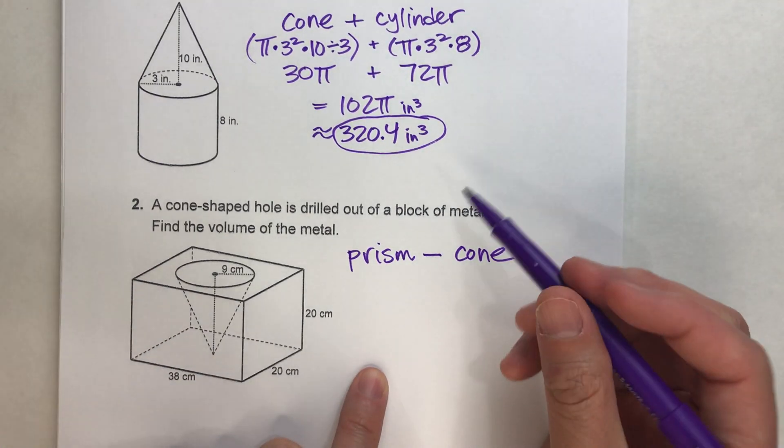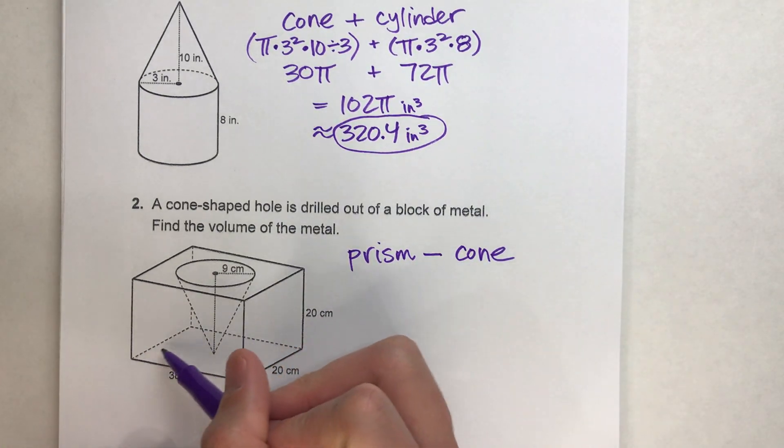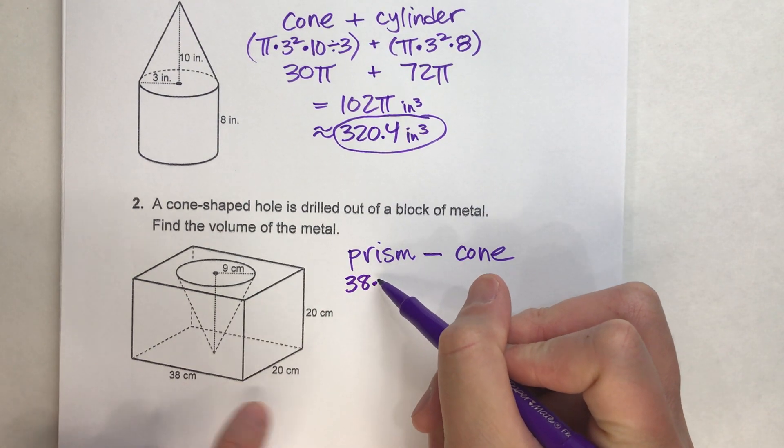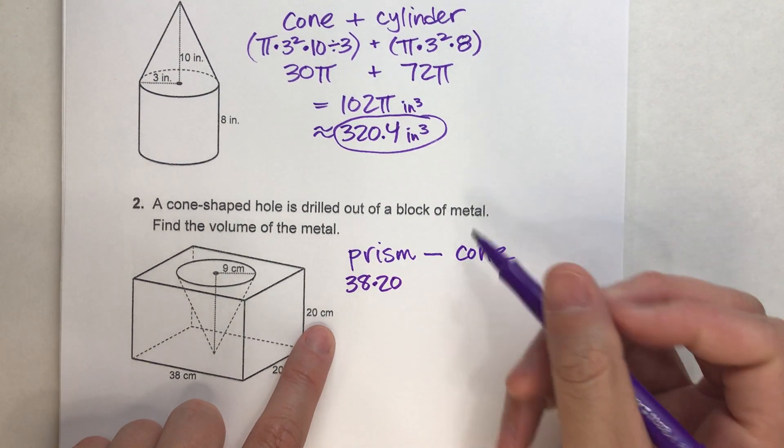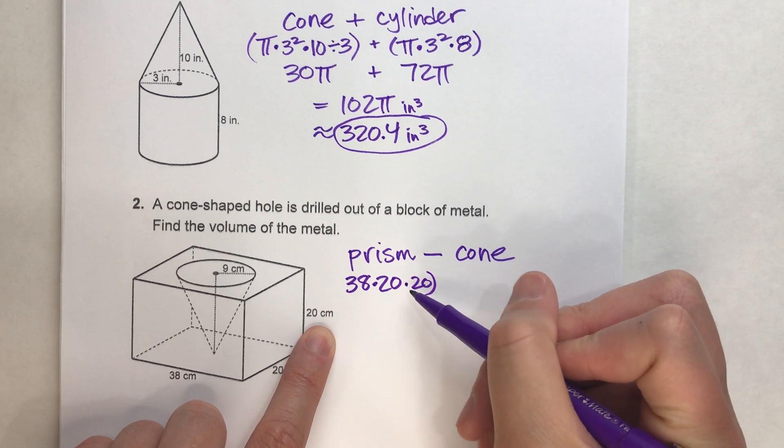So let's do this now. The prism is area of the base times the height, so 38 times 20 times the height, which is 20. So there's my prism.